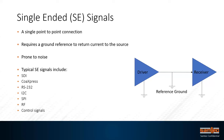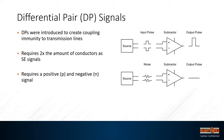But if we want to run tens or hundreds of gigabits per second, more often than not when you get above a certain performance rate you're going to turn to differential pairs. The reason is that the inherent structure of the transceivers and receivers helps to eliminate noise in the system. Differential pairs were introduced to create coupling immunity on transmission lines. You have a source with a pulse on the plus and minus; the subtractor gives you an output pulse. It does require 2x the number of conductors, which is a drawback, but it's become standard practice in high-speed communication.